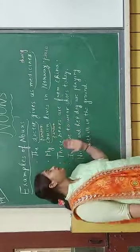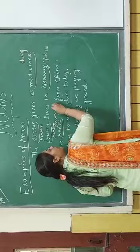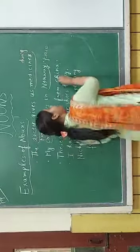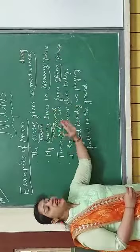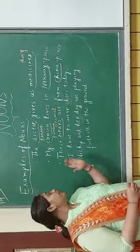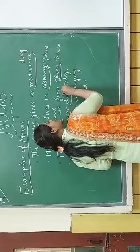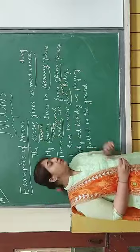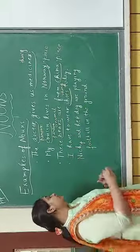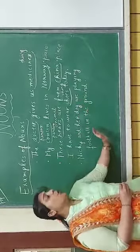Third example: these bears are from China. Bears are animals, and China is a place. So in this sentence, bears and China will be called nouns. Fourth example: I have to wear shoes today. Shoes is a thing, so in this sentence shoes will be called a noun.